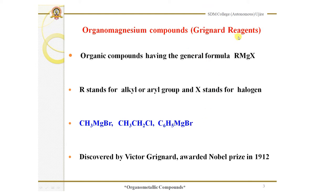A Grignard reagent may be aliphatic in nature or it may be aromatic. Grignard reagents were discovered by a chemist called Victor Grignard, who received the Nobel Prize in 1912 for the discovery of the Grignard reagent.